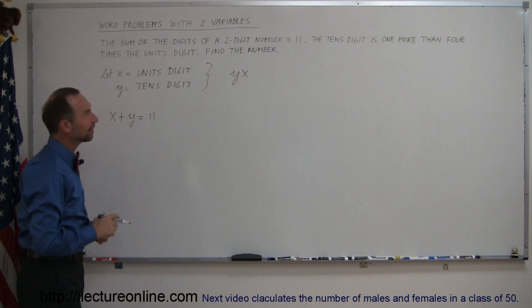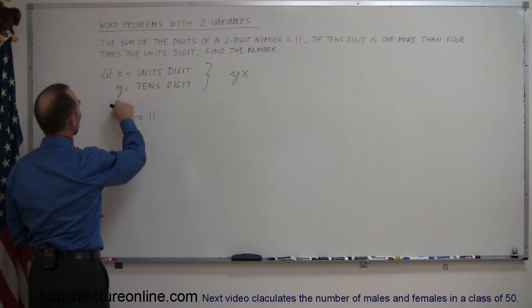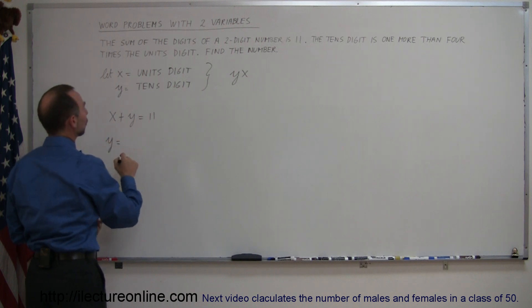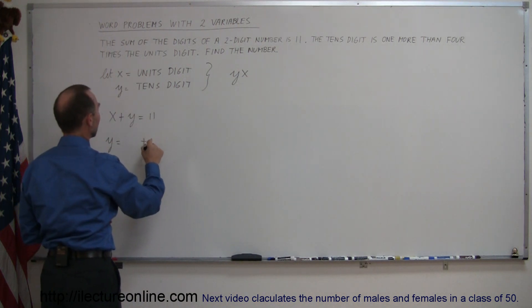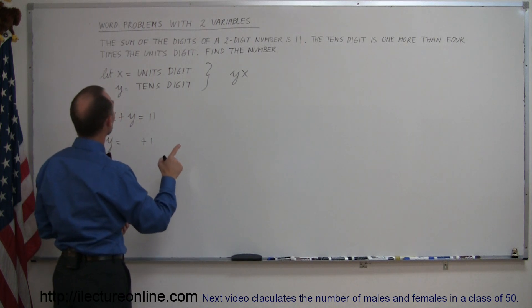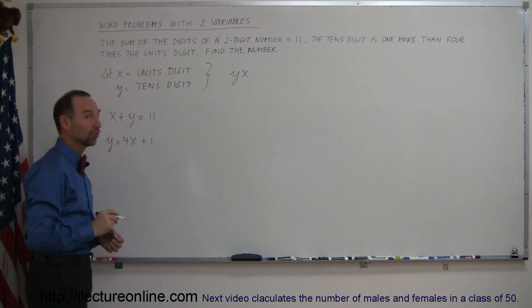And then they tell us that the tens digit is one more than four times the units digit. So the tens digit right here is y, so y is equal to one more, plus one, than four times the units digit. Four times x is the units digit, plus one, that's one more than four times the units digit.